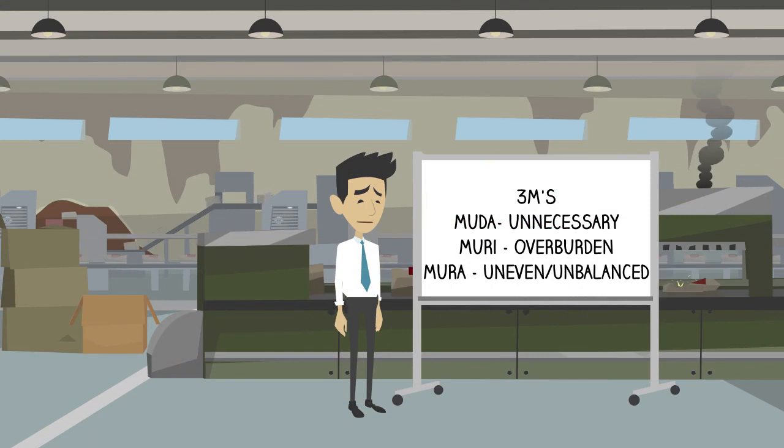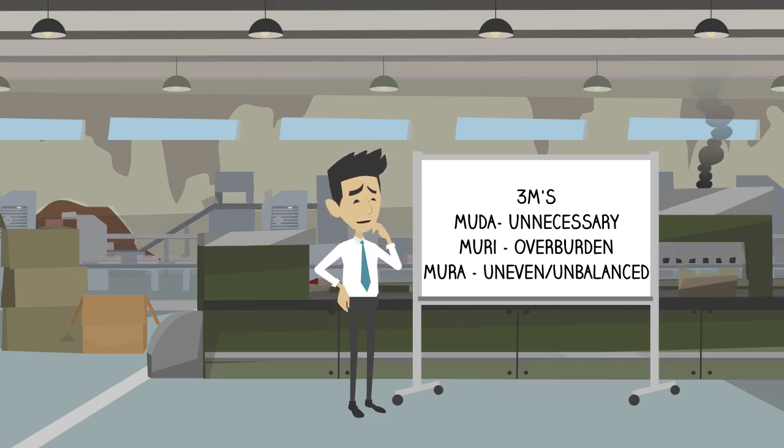Muda, Muri, and Mura are called the three M's. These three Japanese terms were developed by Taichi Ono to describe different types of wasteful activity.